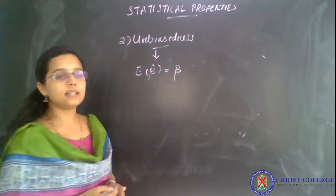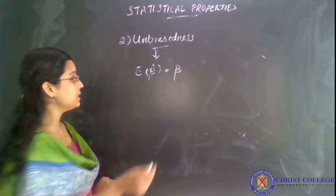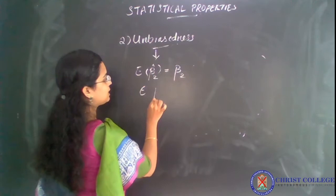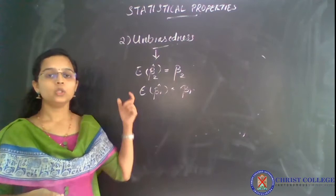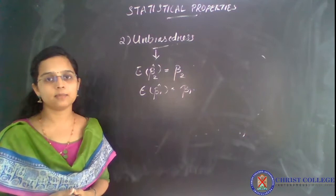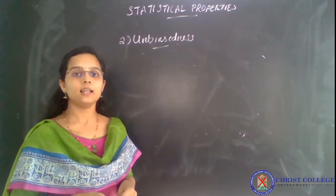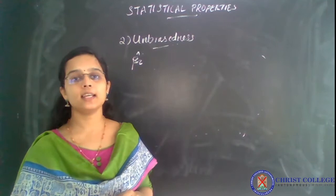This statistical property says that our least square estimators are unbiased. That means expectation of beta 2 hat is equal to actual beta 2, and expectation of beta 1 hat is equal to actual beta 1. These are the conditions of unbiasedness with regard to least square estimators. In order to prove the unbiased nature of least square estimators, let us consider beta 2 hat.